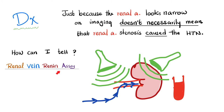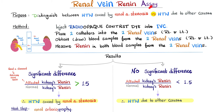This is the purpose of the renal vein renin assay: to distinguish between hypertension caused by renal artery stenosis versus hypertension due to anything else.